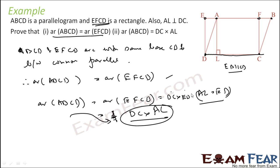Since AL equals L, we can directly apply the area of a parallelogram formula: area of a parallelogram is nothing but a side times the corresponding height. So area of parallelogram ABCD equals DC times L. There are so many ways of solving the same problem.